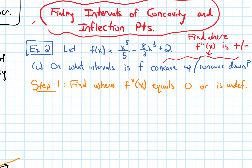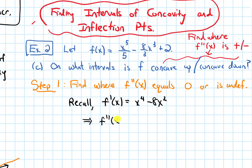Let's recall the first derivative of this function was x to the fourth minus 8x squared. We now need the second derivative. Differentiating gives us 4x cubed minus 16x. Let's factor this to see when it equals 0. We can take out 4x from both terms and be left with x squared minus 4.